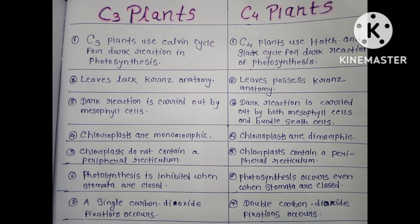In C3 plants, chloroplasts are monomorphic, and in C4 plants, chloroplasts are dimorphic. In C3 plants, chloroplasts do not contain a peripheral reticulum, whereas in C4 plants, chloroplasts contain a peripheral reticulum.